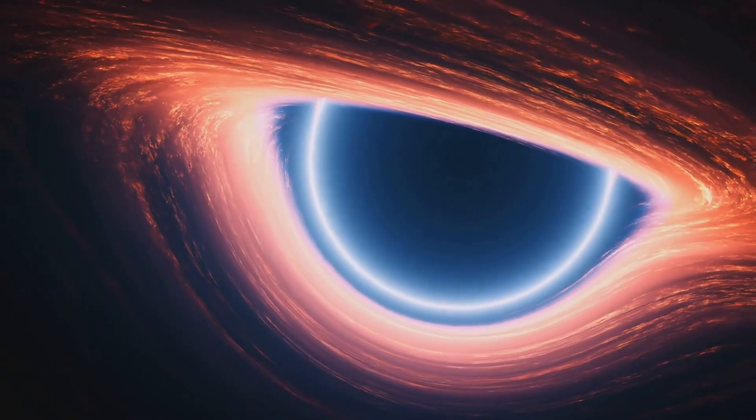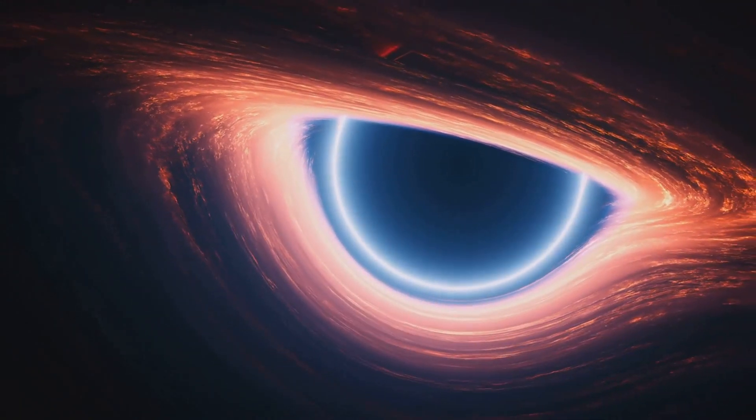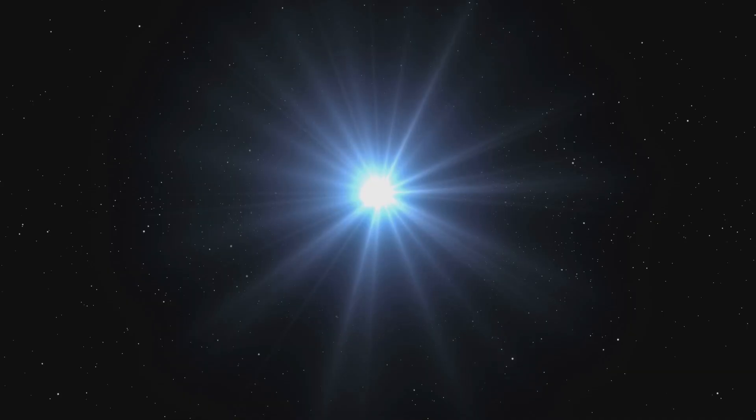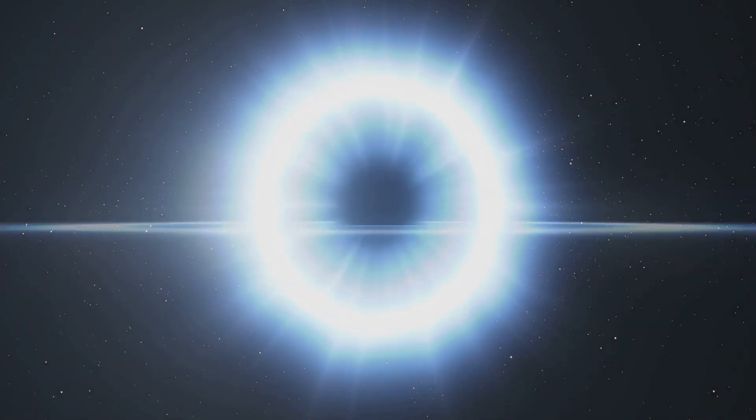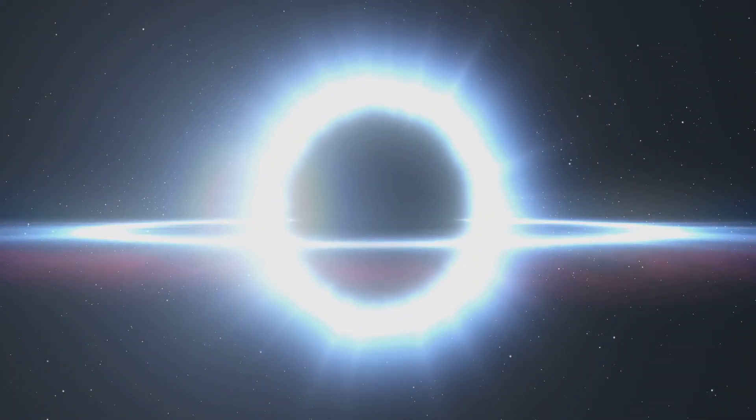For a star to become a black hole, it needs to be at least several times more massive than our sun. These stellar giants live fast and die young, burning through their nuclear fuel much faster than their smaller counterparts.